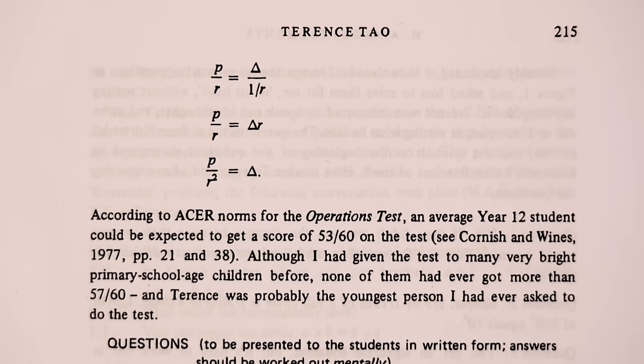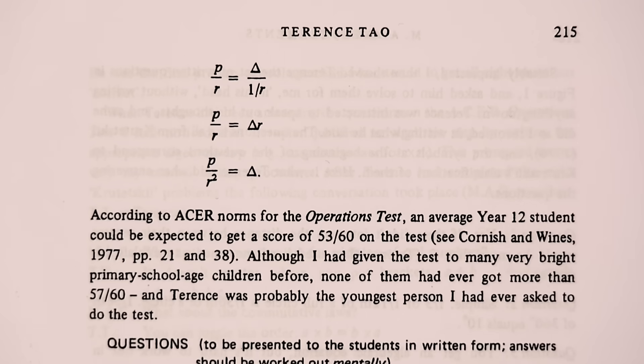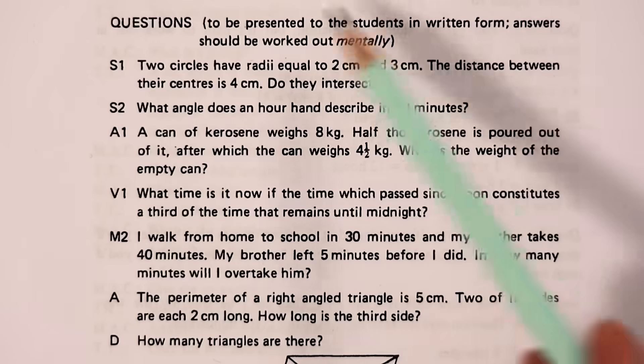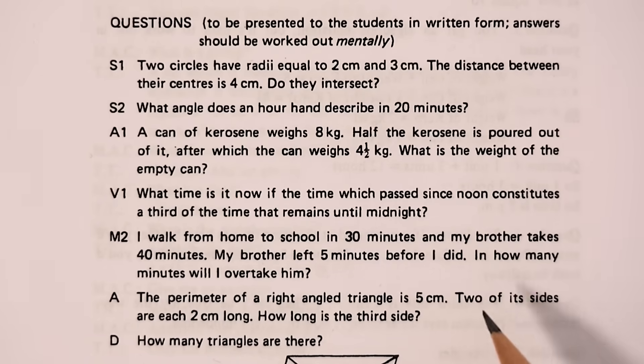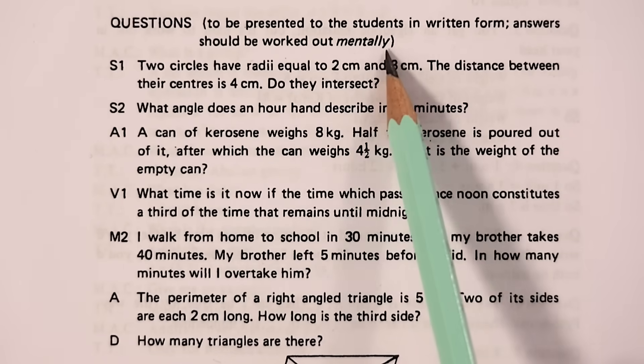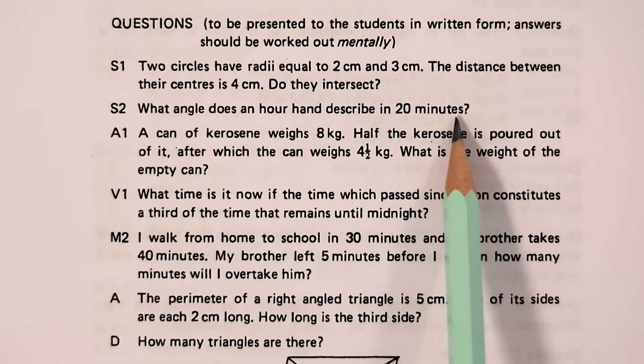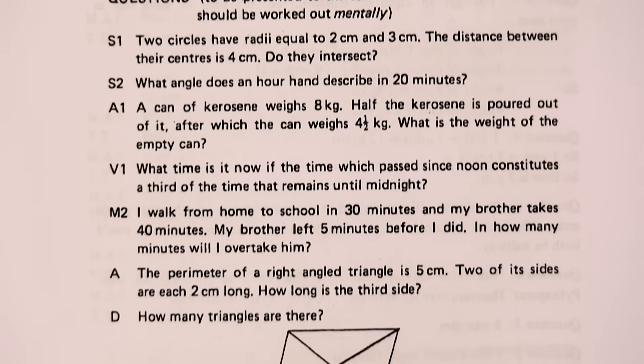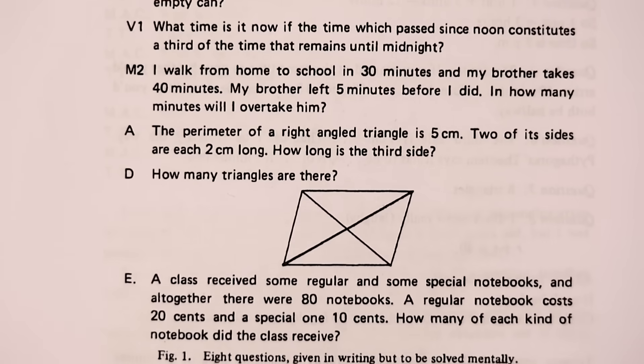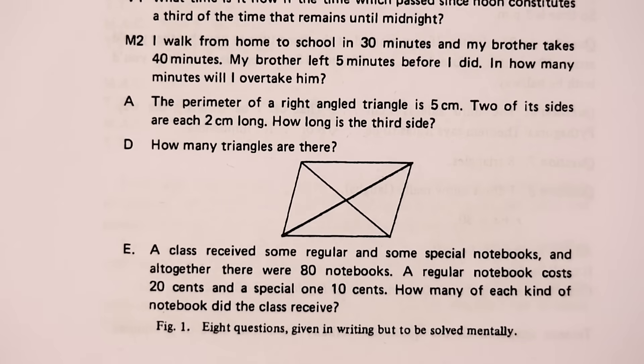Although it was clear to Clements that this test was too easy for Terence, and they'd need to move on to some more difficult things. This next set of questions were presented to him, and they had to be worked out mentally. They include things like, what angle does an hour hand describe in 20 minutes? Terence got all eight of these questions correct as well in a total time of nine minutes.